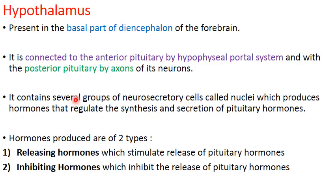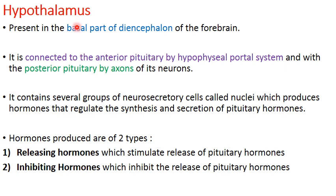Coming to the first endocrine gland — the hypothalamus. It is located in the brain, specifically in the forebrain. The brain can be divided into three parts: forebrain, midbrain, and hindbrain. In the forebrain, the main part is the cerebrum, and at the base of the cerebrum is another part called the diencephalon. The hypothalamus is located at the floor — the basal part — of the diencephalon. It has many functions, one of which is acting as a neuroendocrine gland.